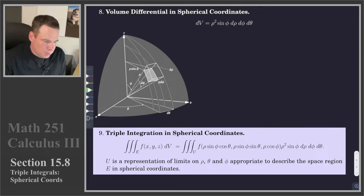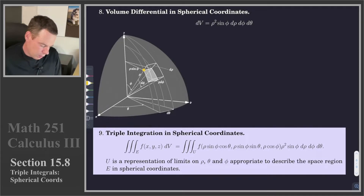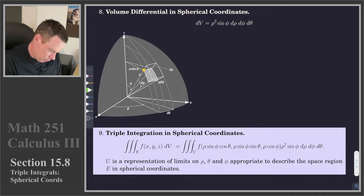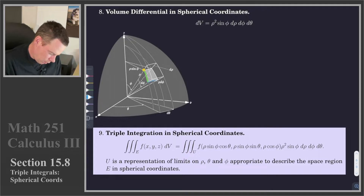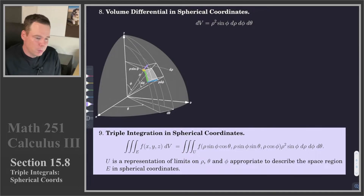What I've got here is a sketch of one of these tiny little spherical boxes. We're imagining we've got a point — one vertex of the side of this box — and we've got a few dimensions happening here: a change in the phi direction, a change in the theta direction, and a change in the rho direction. With all those changes, they make up this box, and we want to figure out what is the volume of this box.